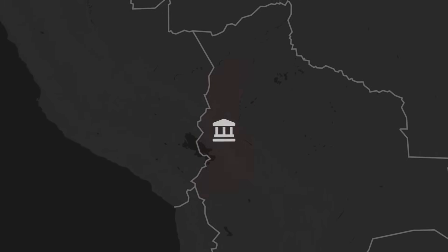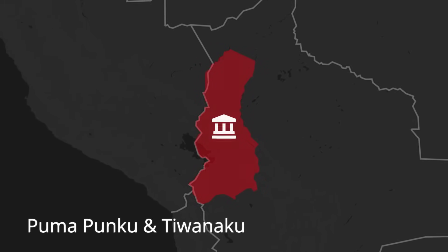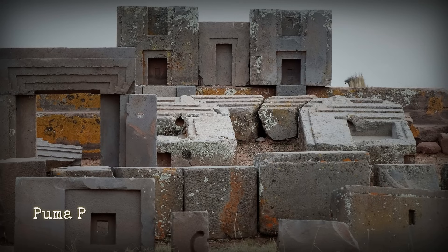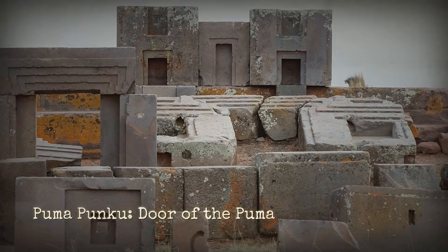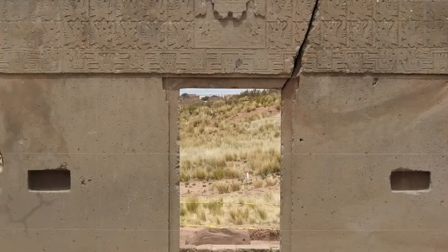Puma Punku stands on the windswept plain just west of Lake Titicaca, tethered to the ancient city of Tiwanaku by both geography and history. The name itself, Puma Punku, meaning Door of the Puma in Aymara, carries echoes of the animal's symbolic power, a guardian at the threshold of a monumental past.